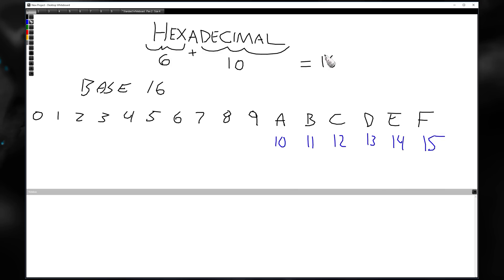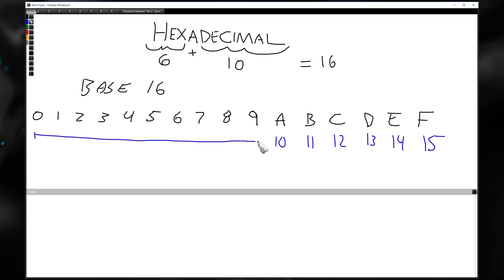Hexadecimal is base 16, and you may be saying it only goes up to 15 — why is it base 16? Zero. You've got to start thinking of zero as a number, a symbol. So from zero to F, that's 16. Going from zero through nine as zero through nine, then A equals 10, B equals 11, and so on.